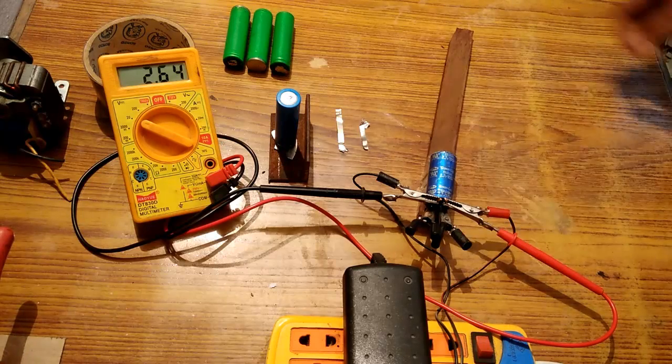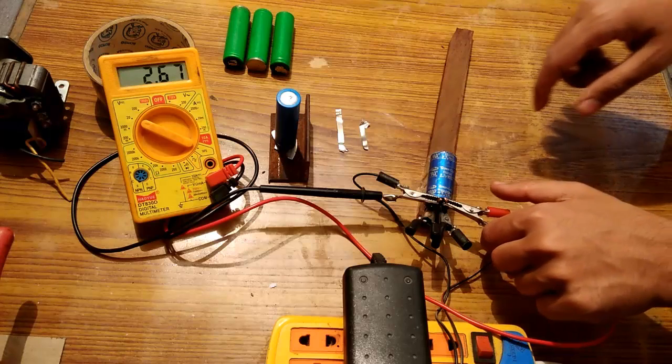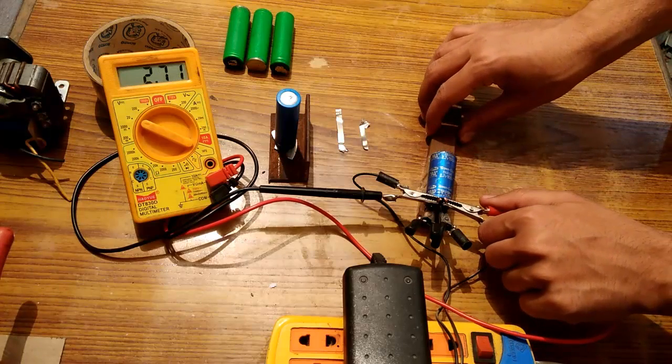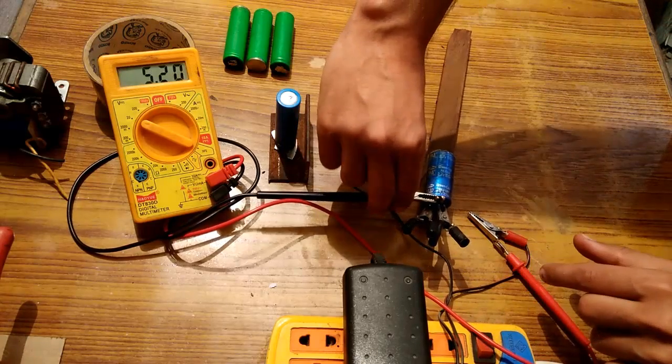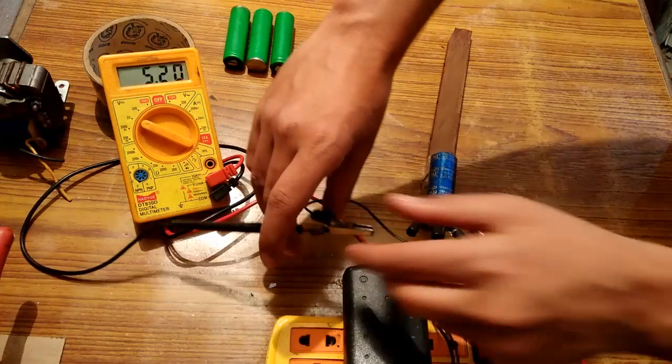It is going to charge and I have to remove it at 2.7. I will remove it at 2.73 because of the voltage drop, and it will still be around 2.69 or 2.70.